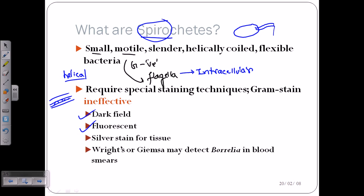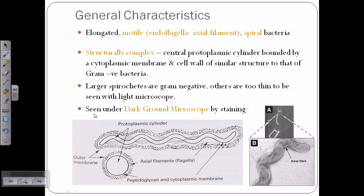They cannot be stained using normal gram stain. Usually we need to visualize them using dark field or fluorescent microscopy, or silver stain. Borrelia is a type of spirochete where we use Giemsa stain, but not simple gram staining. They are elongated and motile, with intracellular flagella — also called endoflagella — originating inside the cell and traveling through it. This flagella is also called the axial filament.